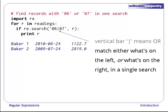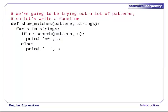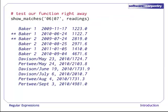Now, we're going to be trying to match a lot of patterns against our data. So let's write a function that will tell us which records match a particular pattern. Our function, show matches, takes the pattern and a list of strings. And then for each of those strings, if the pattern matches, we print out two stars as a marker. Otherwise, we just print out some blanks. Let's test our function right away. If we try to match 06 or 07 against the data that we read in earlier, it seems to be doing the right thing. We've got stars beside the two records that have month 06 or month 07.